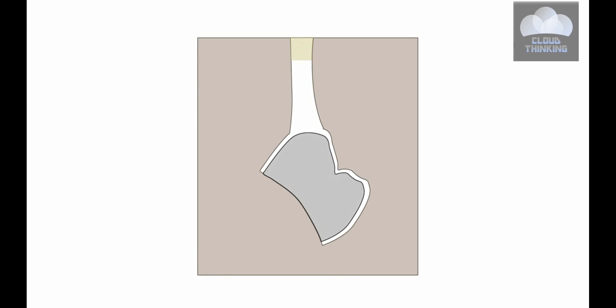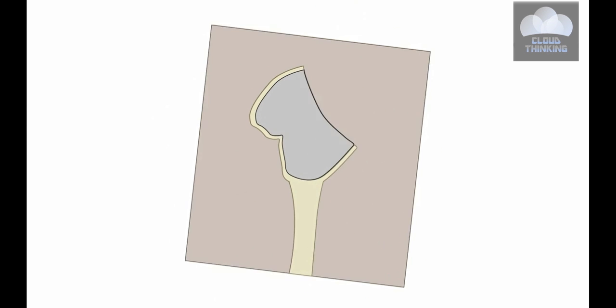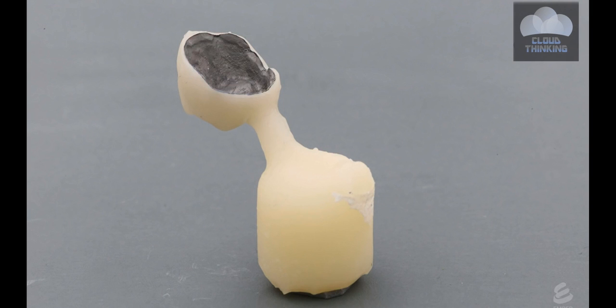A special ceramic is shot into the mold, filling the empty space. After cooling, the investment is removed. The metal substructure is now fused to the porcelain coating.